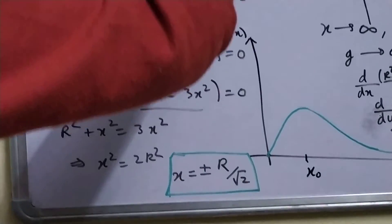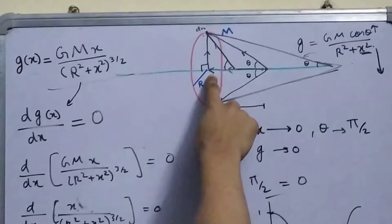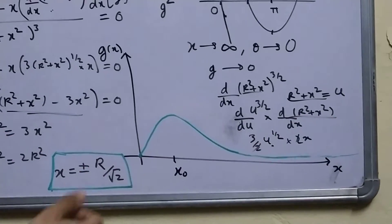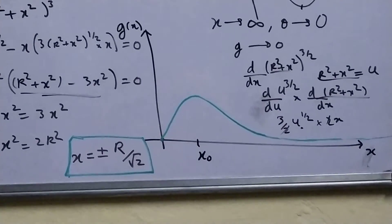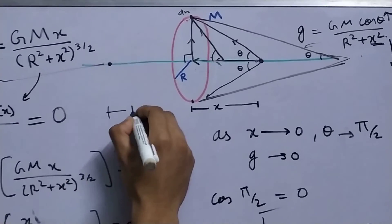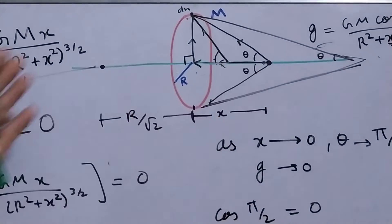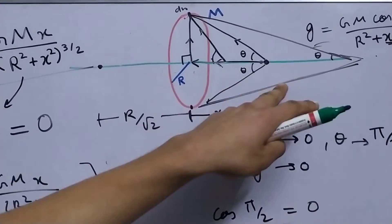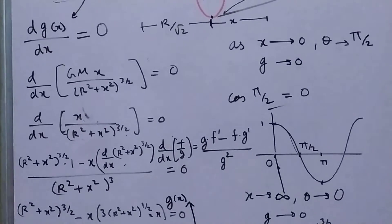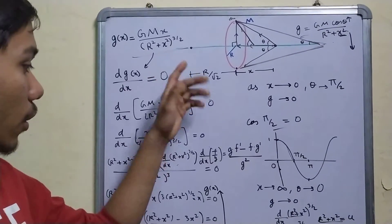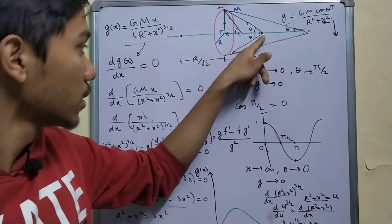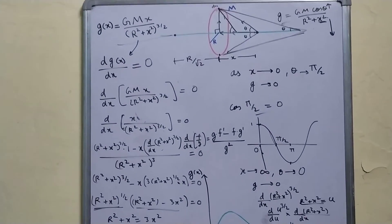At this distance away from the center, your field will reach a maximum and then start to fall down. The plus and minus just represent the two sides. So you will have a maximum on both sides at a distance r/√2. I hope you enjoyed the video and most importantly understood the physical reasoning for why you get a maximum. Thanks for watching.